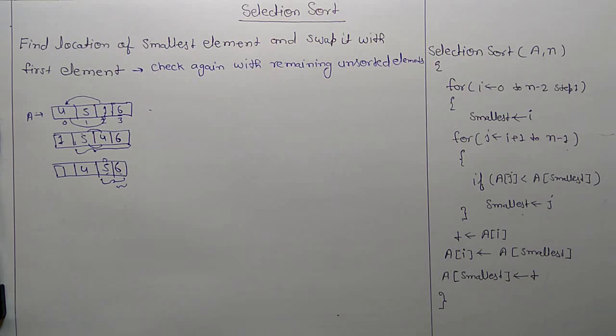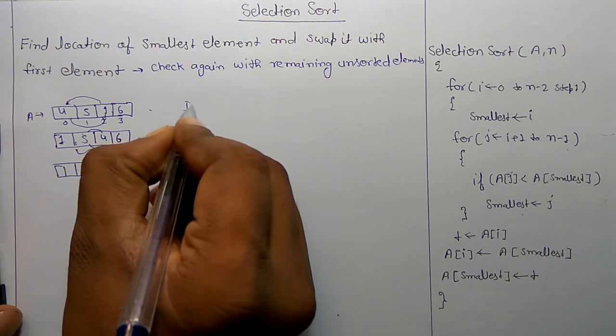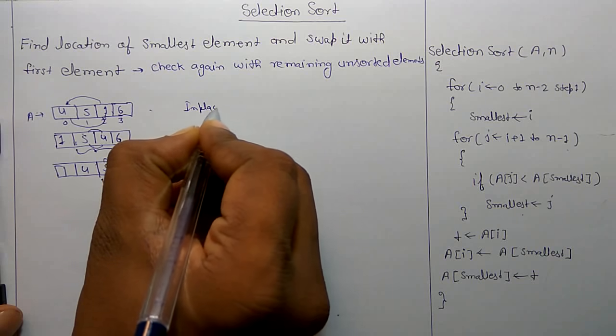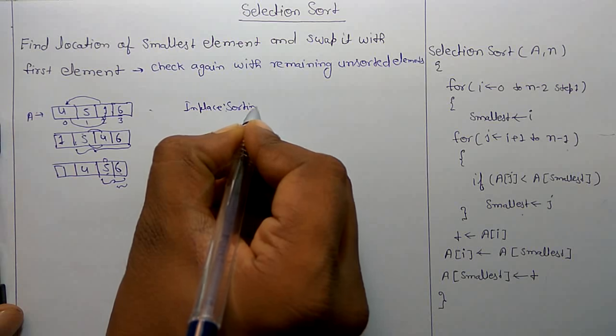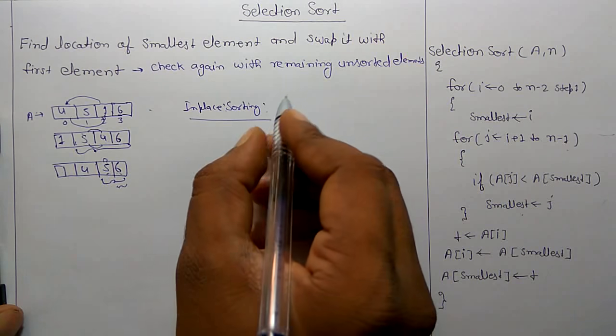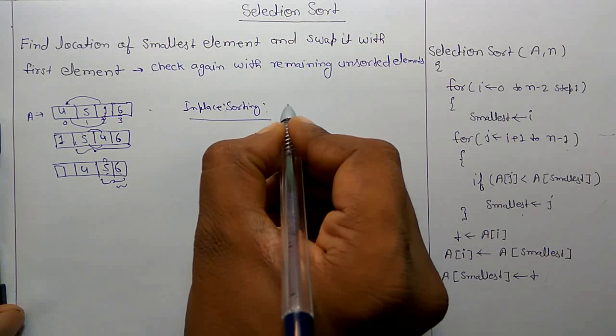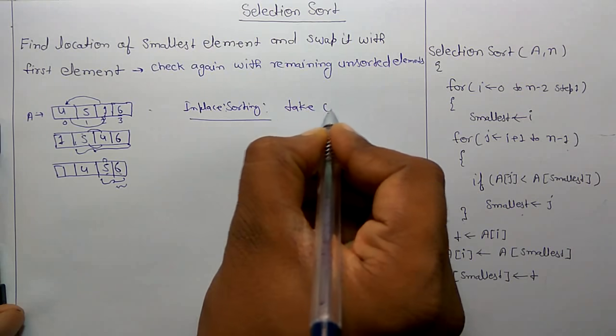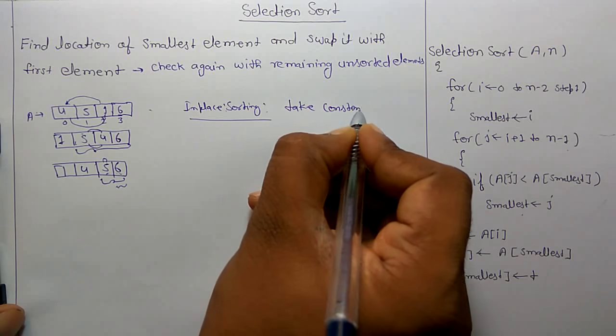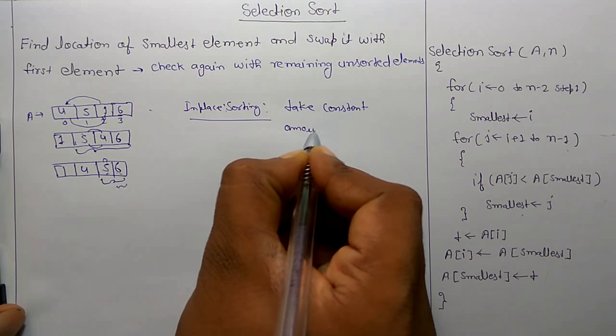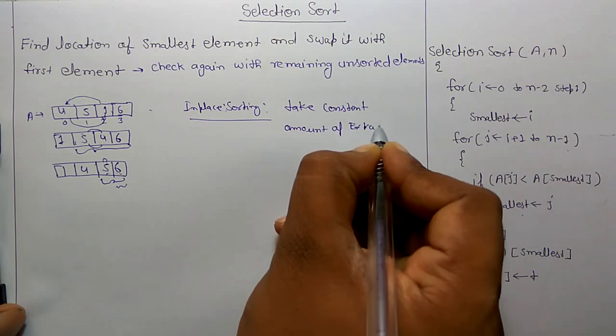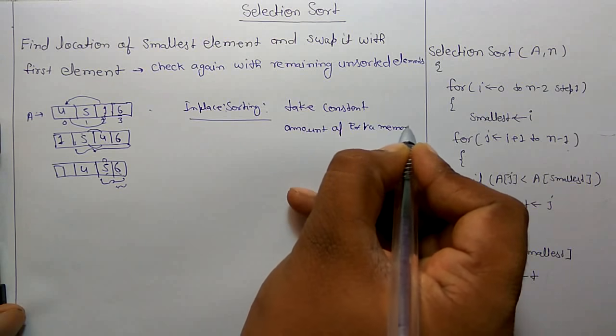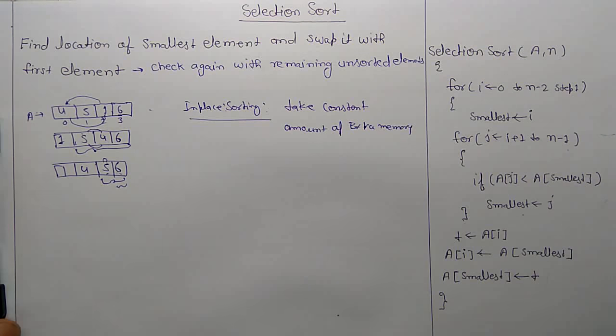So this is selection sort. This is in-place sorting. In-place sorting means it takes constant amount of extra memory.